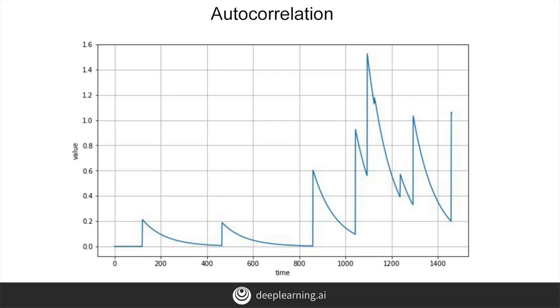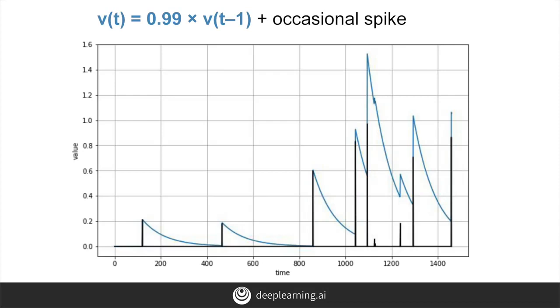Between the spikes, there's a very deterministic type of decay. We can see here that the value of each time step is 99% of the value of the previous time step, plus an occasional spike. This is an auto-correlated time series.